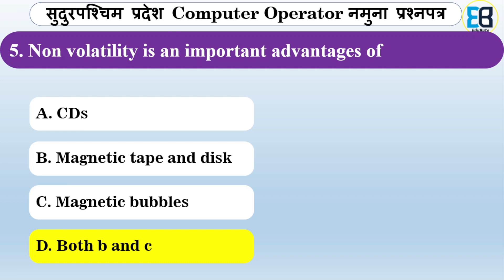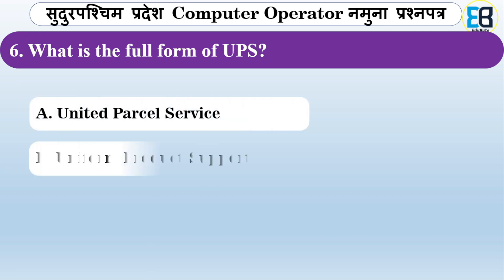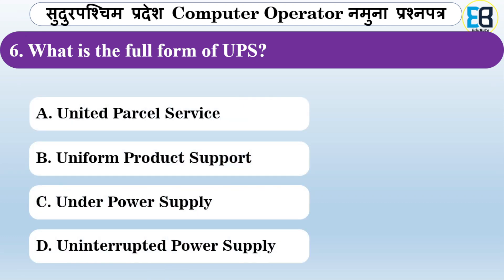What is the full form of UPS? Options include United Parcel Service, Uniform Product Support, Under Power Supply, or Uninterrupted Power Supply. The correct answer is option D — Uninterrupted Power Supply.